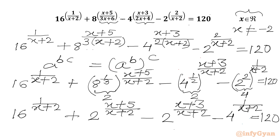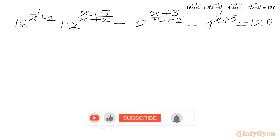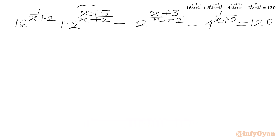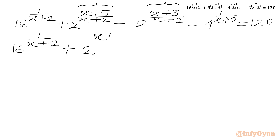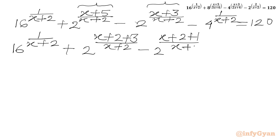Now I will split x+5 and x+3. So I can write: 16 power (1 over x+2) plus 2 power ((x+2+3) over (x+2)) minus 2 power ((x+2+1) over (x+2)) minus 4 power (1 over x+2) equals to 120.